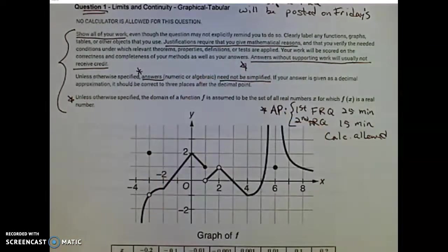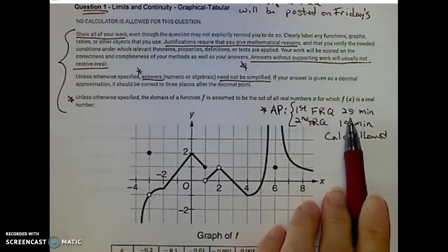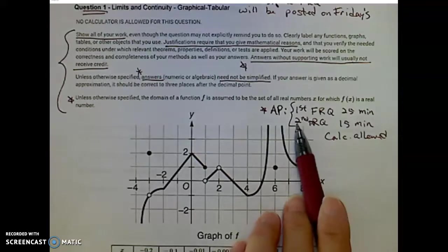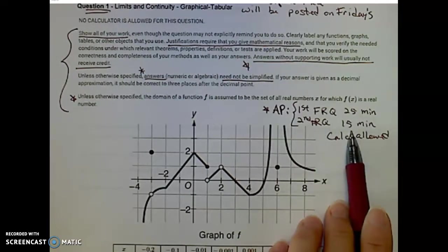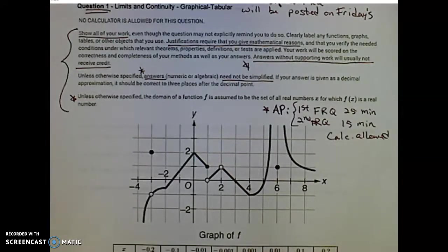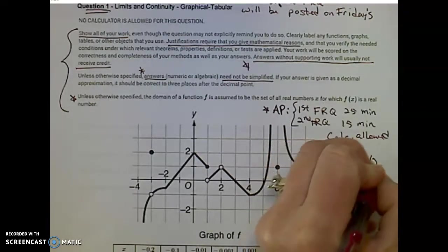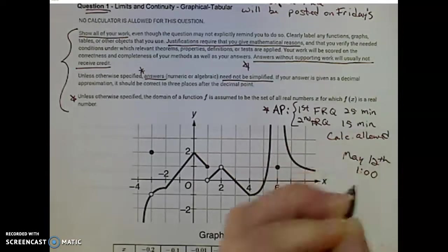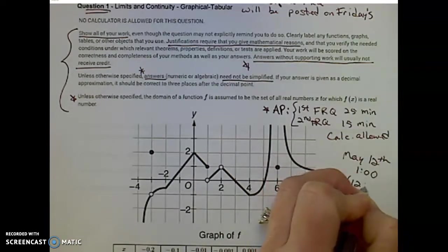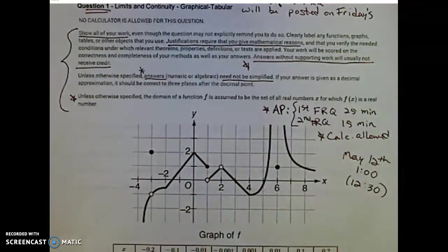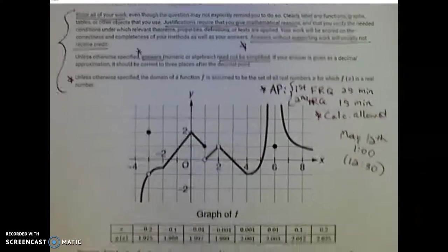The AP exam is just going to be two free response questions, no multiple choice. The first free response question will be a 25-minute time limit with five minutes after that to upload your solution. Your second free response question will be a 15-minute time limit with five minutes to upload. So it's essentially a 50-minute test. It is on May 12th, a Tuesday, at 1 o'clock — you need to be logged on by 12:30. A calculator is allowed, although the problems are set up to not require one.